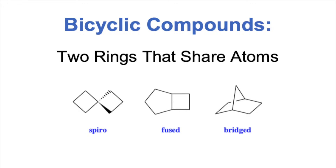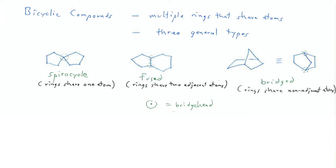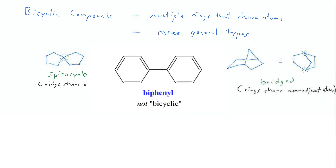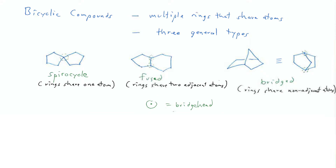Today we're going to be looking at bicyclic compounds. These are compounds that have multiple rings that share atoms. Not all molecules that have two rings are bicyclic in this sense. Think of a molecule like biphenyl — it has two benzene rings, but those two rings don't share any atoms. They each have their own unique set of six carbons. A bicyclic compound has to have rings that share atoms.